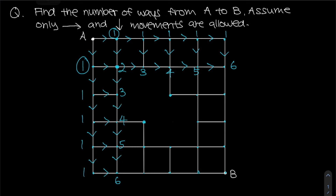Now looking at these corner intersection points, they only see one arrow, which carries the value four. That means there are still only four ways to reach those two intersection points. From there: four plus five gives nine, and nine plus six gives fifteen. The same applies on the other side: four plus five is nine, and nine plus six is fifteen.